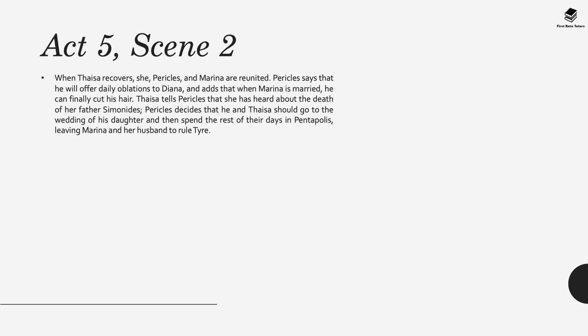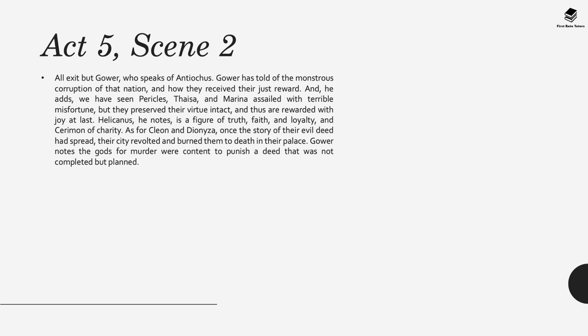Thaisa tells Pericles she has heard about the death of her father Simonides. Pericles decides he and Thaisa should go to the wedding of their daughter and then spend the rest of their days in Pentapolis, leaving Marina and her husband to rule Tyre. All exit but Gower, who speaks of Antiochus and the monstrous corruption of that nation and how they received their just reward. He adds that Pericles, Thaisa, and Marina were assailed with terrible misfortune but preserved their virtue intact and are thus rewarded with joy at last. As for Cleon and Dionysa, once the story of their evil deed spread, the city revolted and burned them to death in the palace. The gods punished a deed that was not completed but planned.